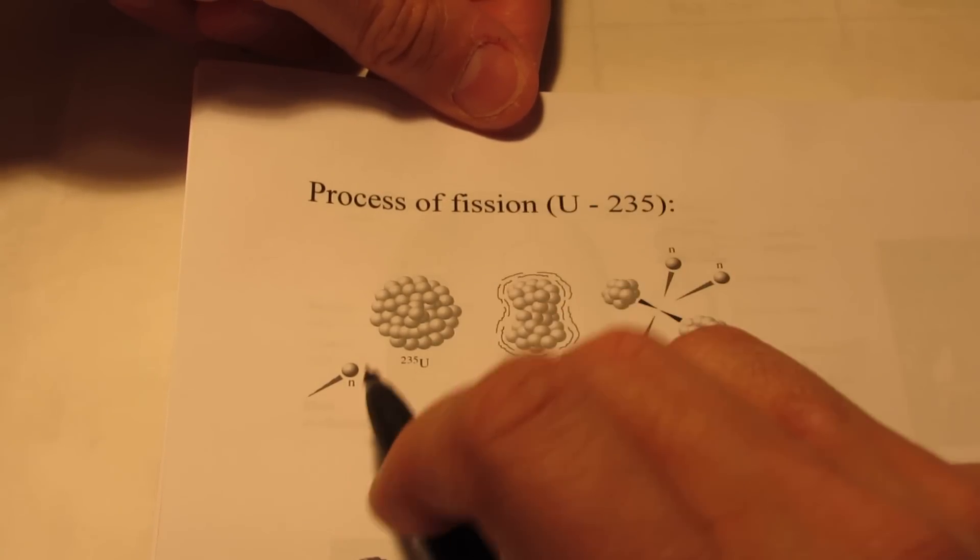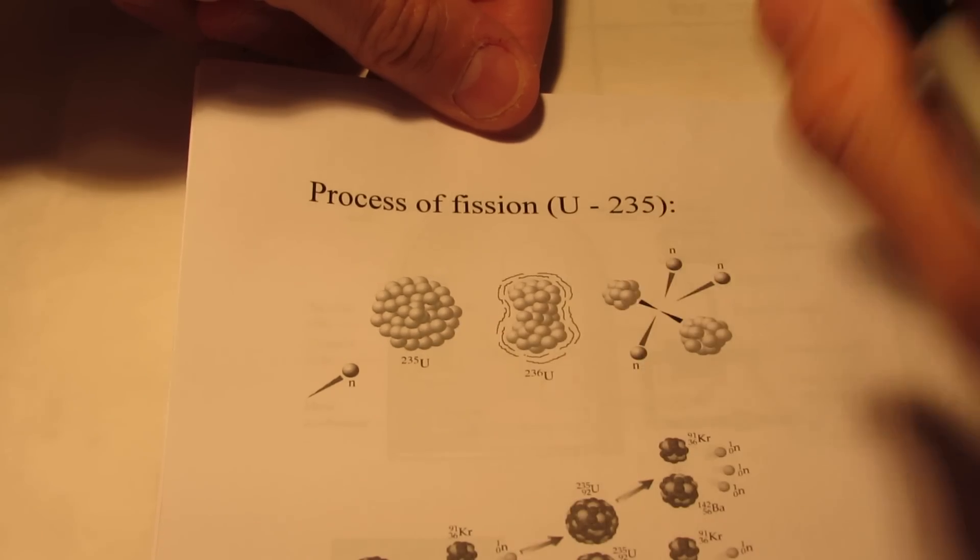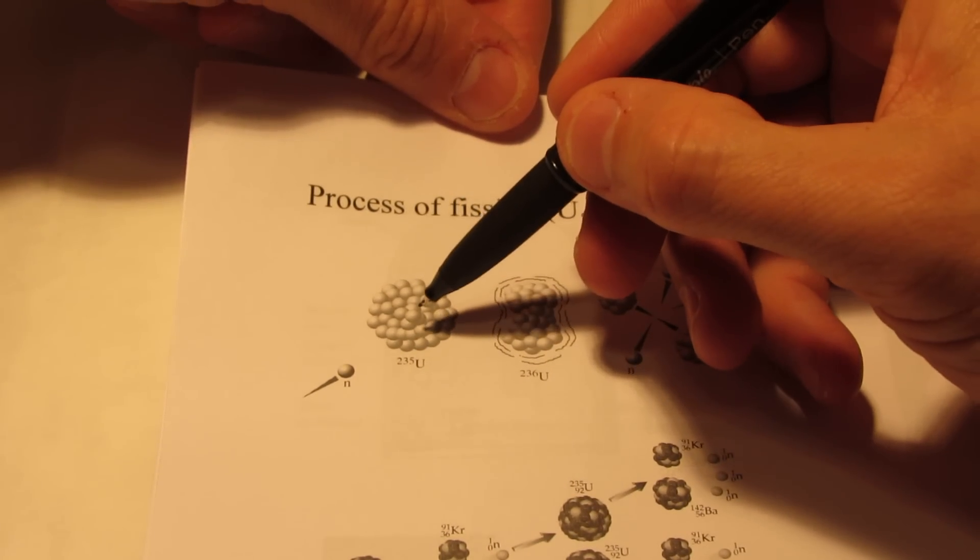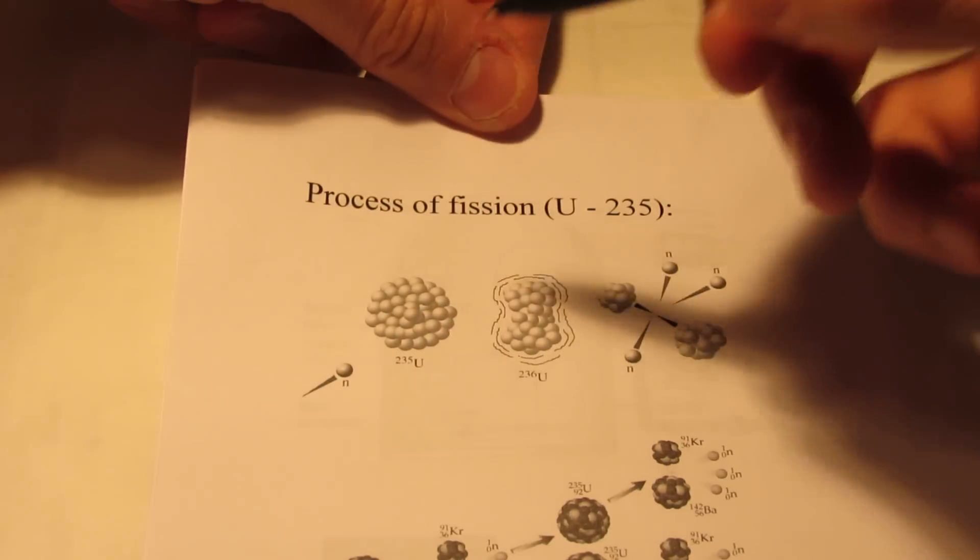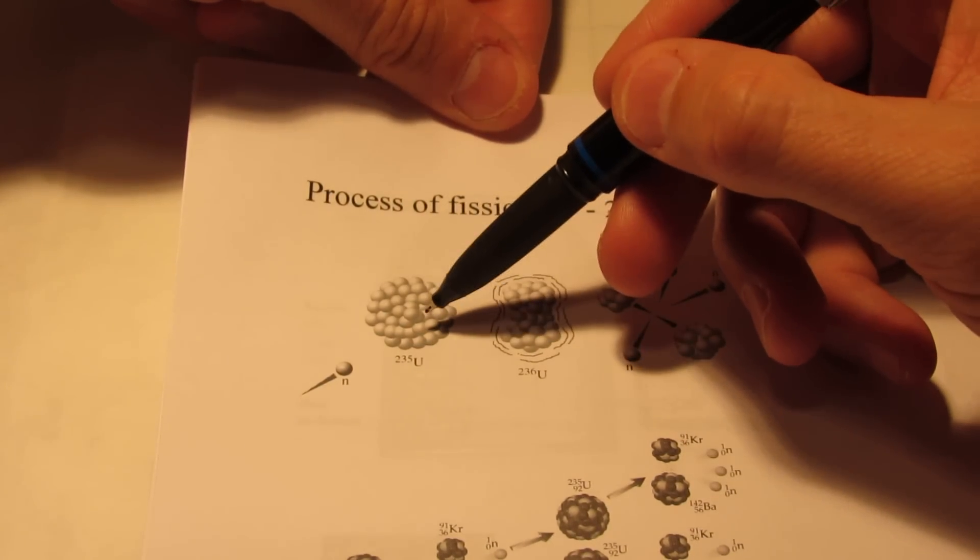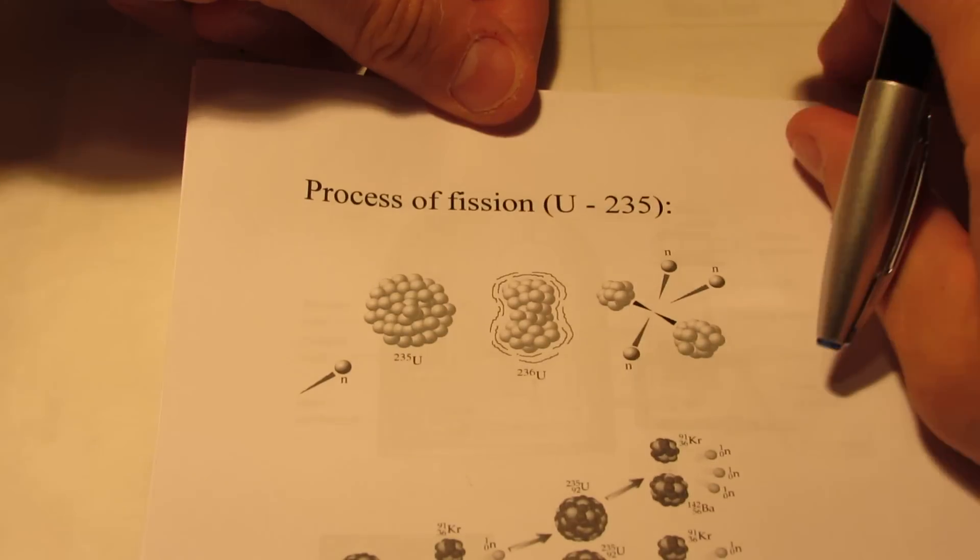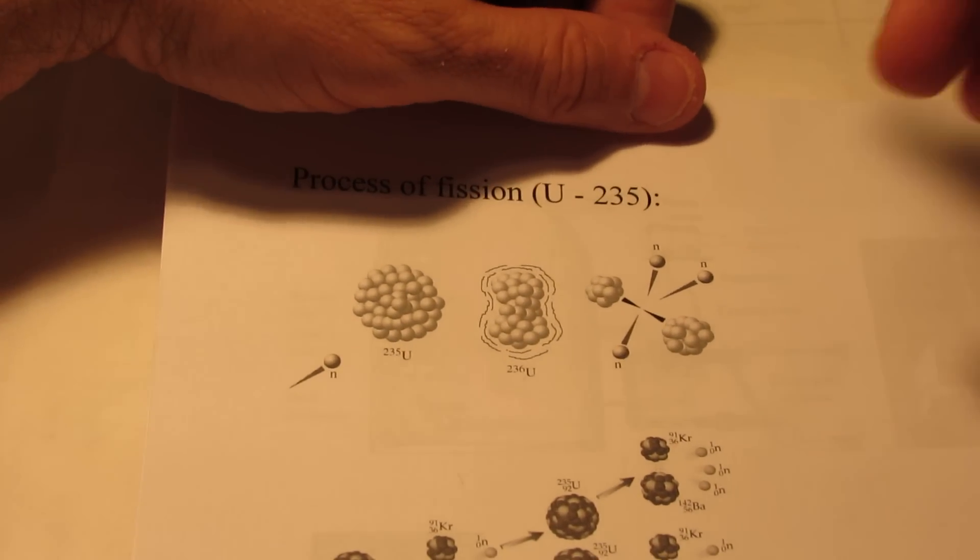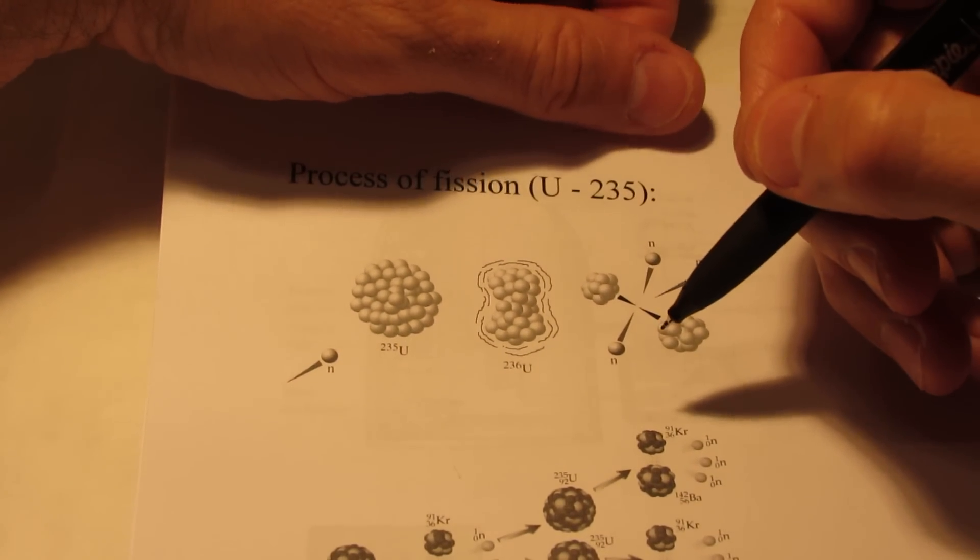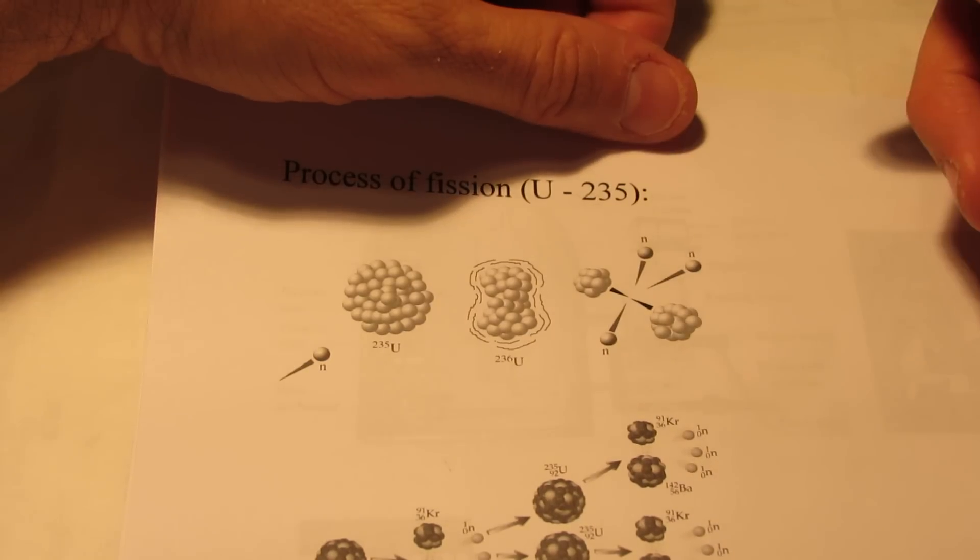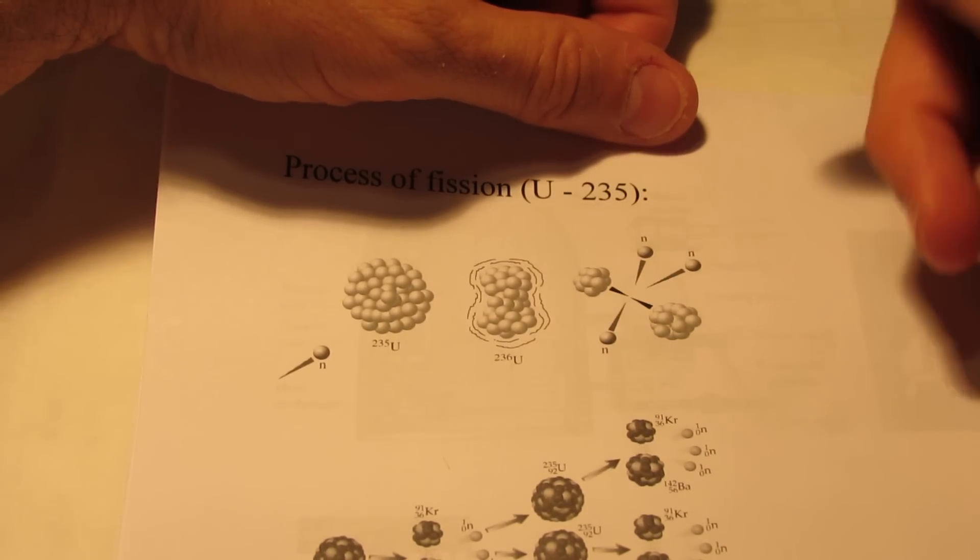Now if a neutron is shot and it hits that nucleus in just the proper orientation at just the proper velocity, it can cause a disruption in that nucleus so much so that the nucleus splits into two smaller nuclei. Now when that happens, there's a tiny change in mass, and that mass is converted to energy.